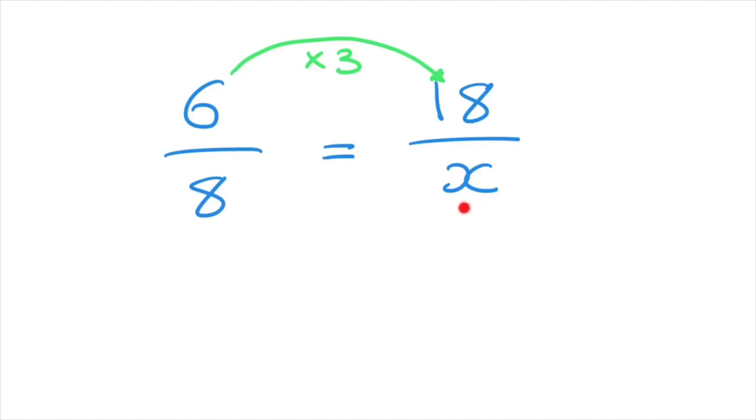And so to find what x has to be, we carry out the exact same operation starting from 8. And 8 times 3 is equal to 24. So this x here can be replaced by 24. And there we go. We've just written 6 over 8 as an equivalent fraction whose numerator is 18.